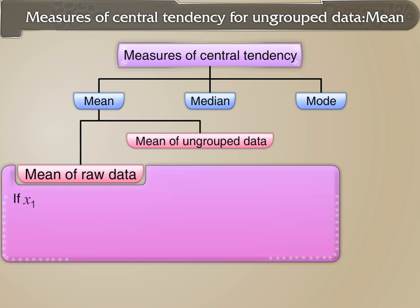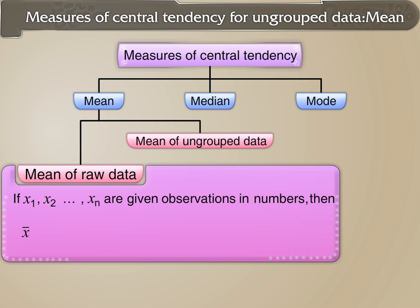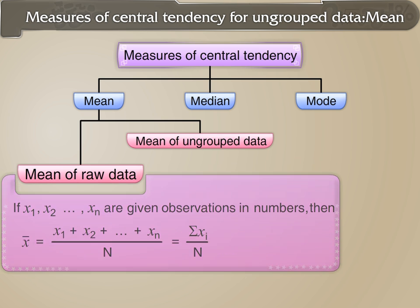Mean of raw data: If x1, x2, and so on till xn are given observations, then mean x-bar is defined as x-bar equals x1 plus x2 plus so on up till xn, divided by n, which is also equal to sigma xi upon n.